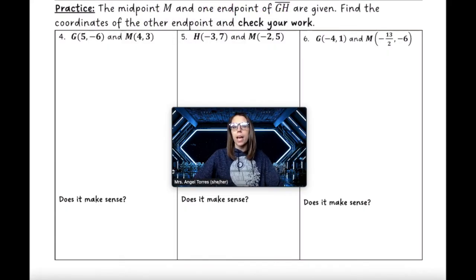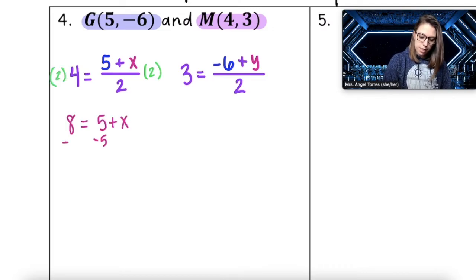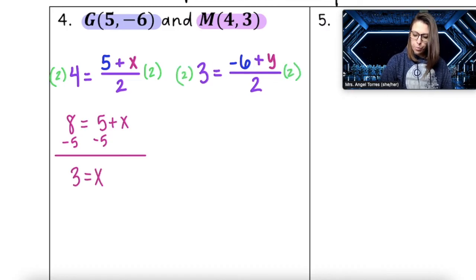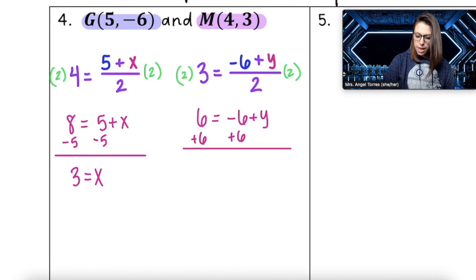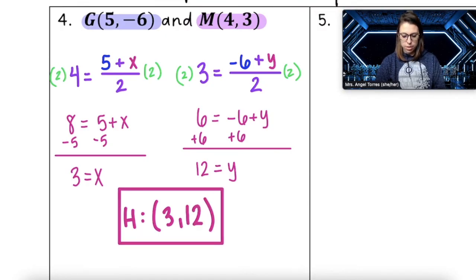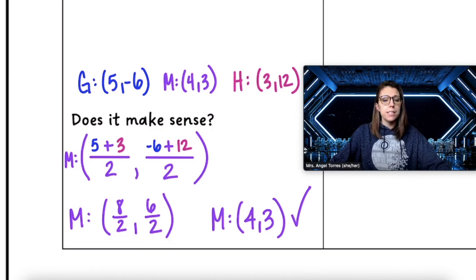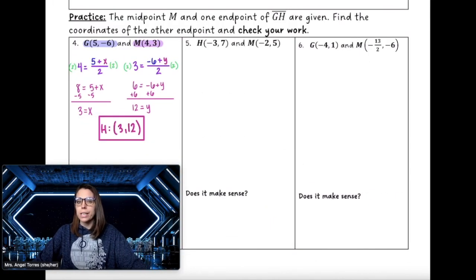Time to practice. The midpoint M and one endpoint of segment GH are given — find the coordinates of the other endpoint and check your work. With equations set up for x and y: multiply both sides by 2 to get 8 equals 5 plus x, subtract 5, and the x value is 3. Multiply both sides by 2 to get 6 equals -6 plus y, add 6, and the y value is 12. So the coordinates of H are at (3, 12). Checking with the midpoint formula using G at (5, -6) and H at (3, 12) confirms the midpoint is at (4, 3). Your turn to find the coordinates of the endpoint for number 5 and number 6.